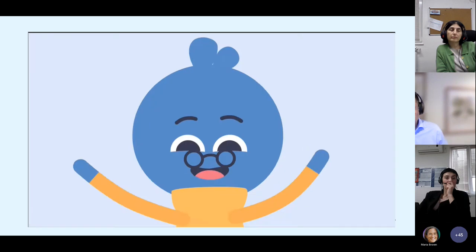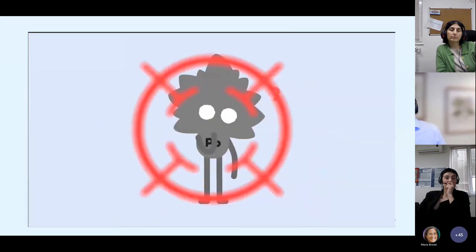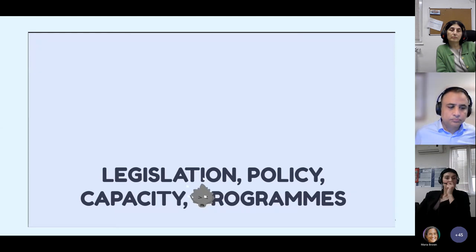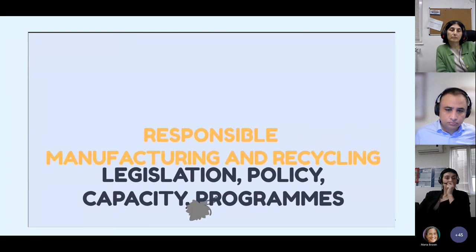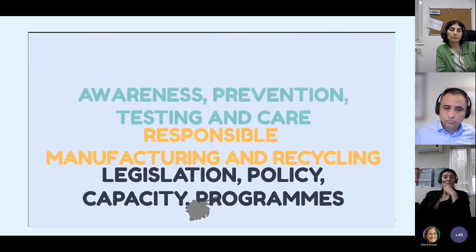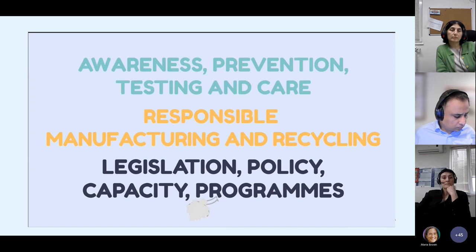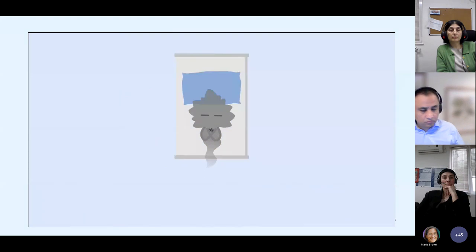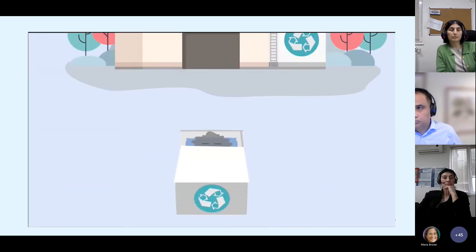It is possible to eliminate the danger of lead once and for all, but this needs support from governments to eliminate lead from consumer products such as paints, toys, ceramics, spices, and cosmetics, and to ensure contaminated sites are cleaned up. It needs support from industry to ensure responsible manufacturing and recycling. And it needs support from communities to be aware, safely dispose of batteries and electronics, keep children away from industrial sites, and seek testing and care if a child may have been exposed. By working together, we can put lead to bed and ensure a bright future for every child.